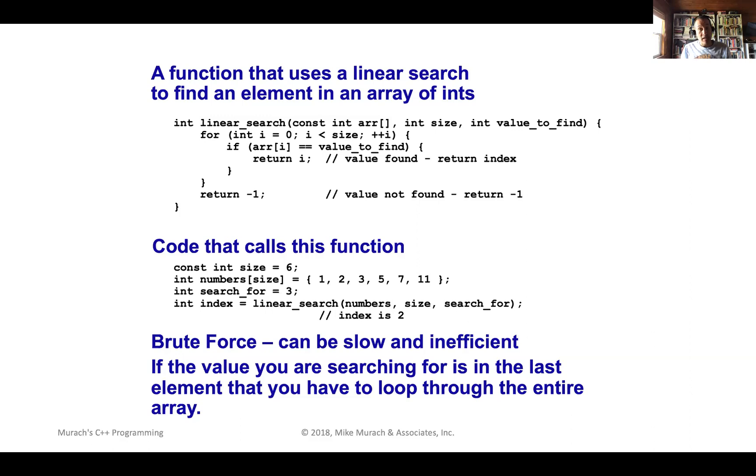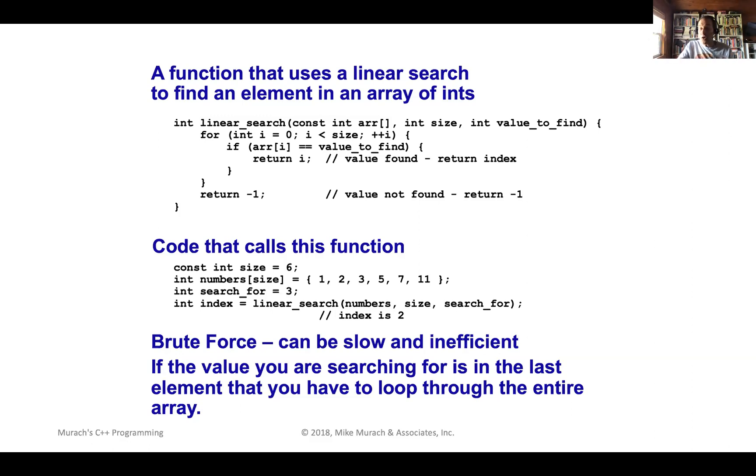Now, the downside of linear search is it can take a long time to do, right? I mean, again, we're just talking about six elements here. But imagine you have six million elements. And let's say the number you're looking for is the very last value in the array. Well, in that case, you've got to search through the entire thing to find that one value. So the downside of a linear search is it's fairly straightforward, it's easy to implement, but it can be slow and it can be very inefficient.